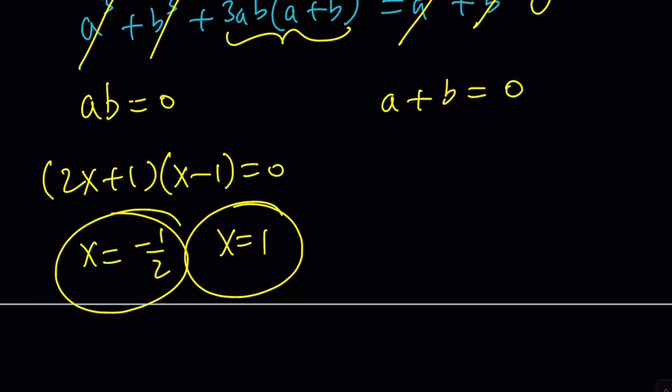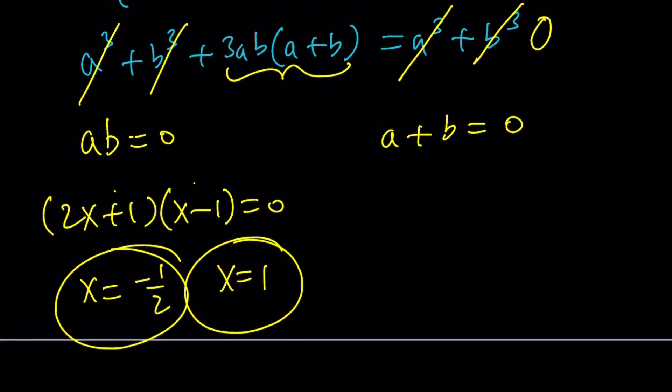And what about a plus b, right? This is a and this is b, so we're just going to add them. 2x plus 1 plus x minus 1 equals 0. So that is 3x equals 0, and that is x equals 0.